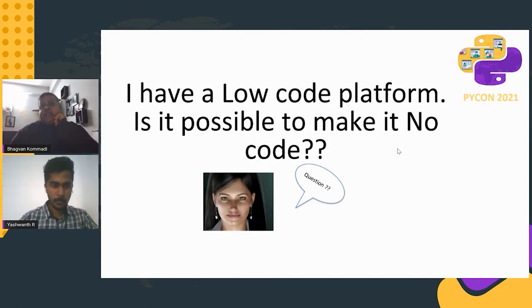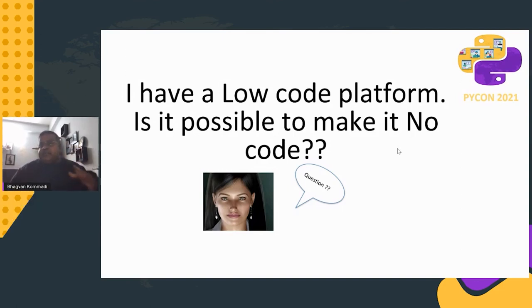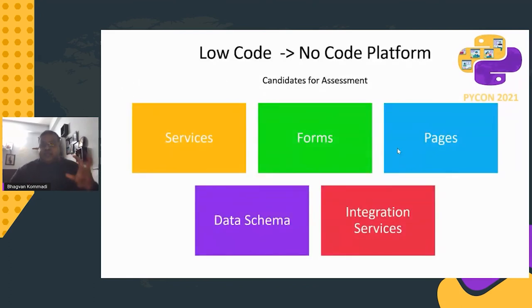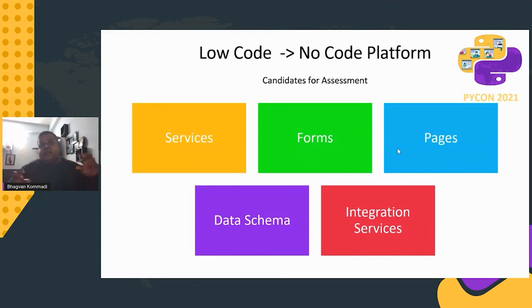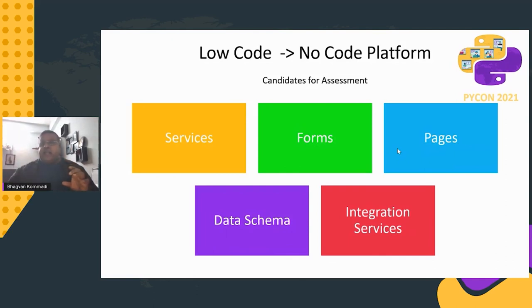If you already have a low-code platform and want to make it no-code, the first candidates for assessment are services, then front-end pages, then database schema, then integration services, deployment, and cloud. Identify which variants can be configured from the UI as an admin or application developer — either at run time, design time, or deployment time.